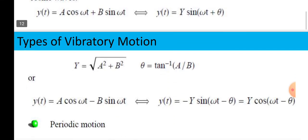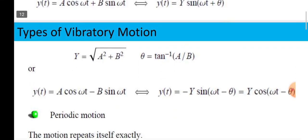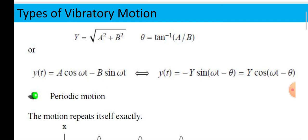Y equals square root of A square plus B square, theta equals tan inverse of A upon B. In terms of y t equals A cos omega t minus B sin omega t, or Y of t equals minus Y sin omega t minus theta. Y equals cos omega t minus theta.